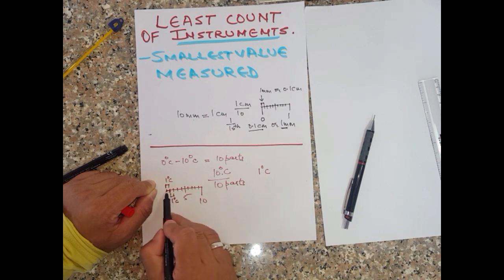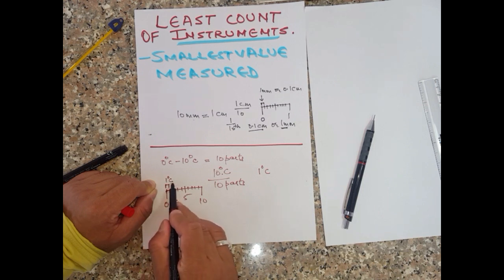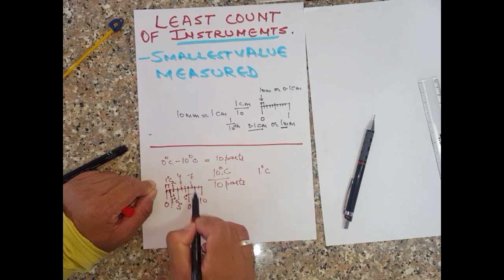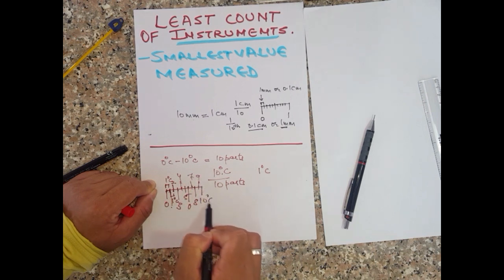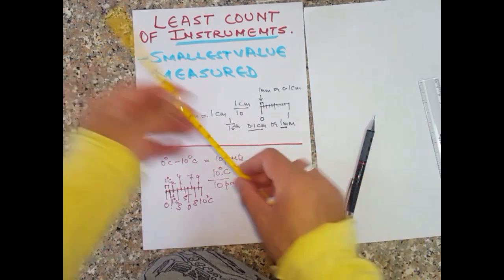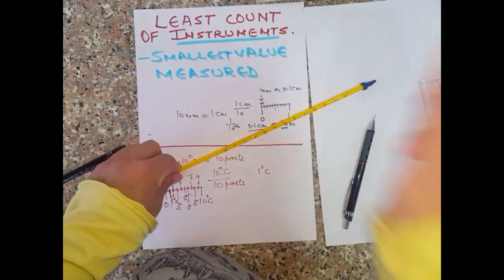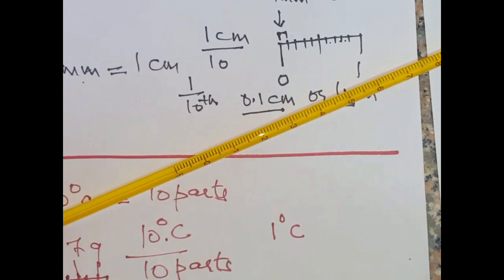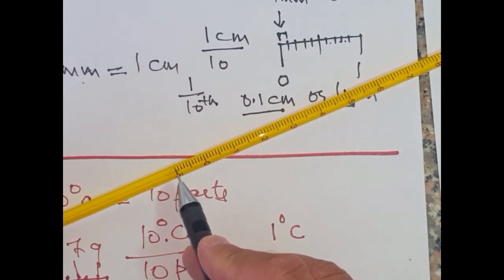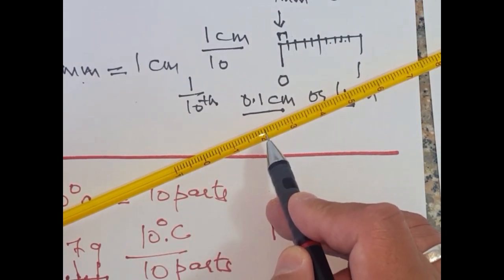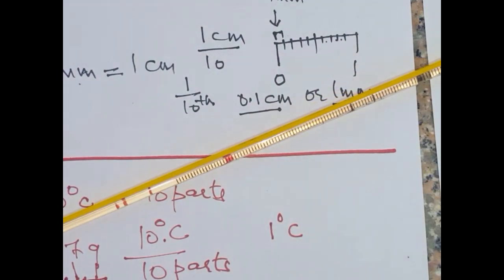Let's verify: from 0 degrees Celsius, from here to here is 1 degree Celsius, then 2 degrees, 3 degrees, 4 degrees, 5 degrees, 6 degrees, 7, 8, 9, and 10 degrees Celsius. This tells us that the least count of this thermometer is 1 degree Celsius — the smallest temperature it can measure. The distance between each graduation is 1 degree Celsius at any point on the thermometer.